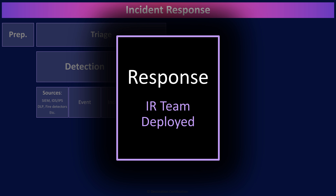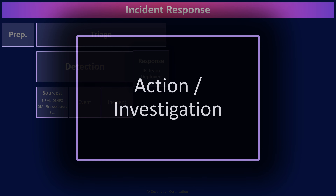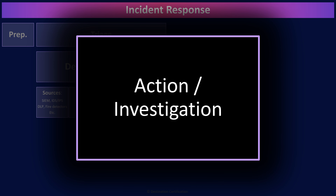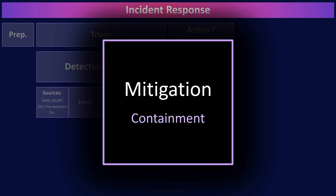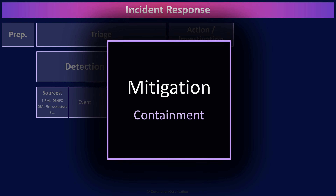More on that in video 6 of Domain 7, when I talk about business continuity management. The next category is action and investigation. The next step is mitigation, where we try to minimize the damage and contain the incident. For example, if we have a worm ripping through our network, we may decide to disconnect systems from the network. Or if we have a fire, activate the fire suppression system. These are ways to try to minimize the damage.